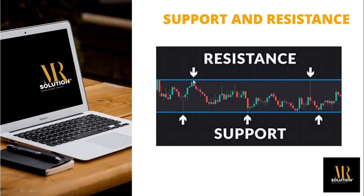Any point the price is finding difficult to break above is resistance; any point the price is finding difficult to break below is support. The conventional rule in trading is: buy at support, sell at resistance. Buy at this point, sell at this point — then price falls again, you come back and buy at support, sell again at resistance. That's the basic concept of support and resistance. Everything will be detailed more in the advanced class.